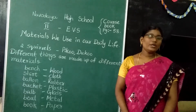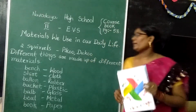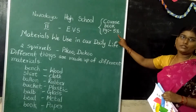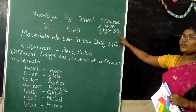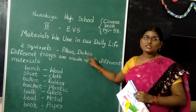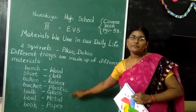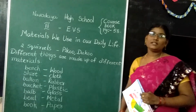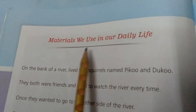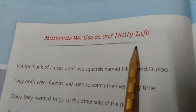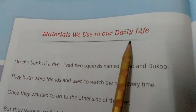Now take your course book, children. Open page number 58. We will discuss in this lesson a small story and also a brief explanation of these different kinds of materials. Our lesson name is materials we use in our daily life.